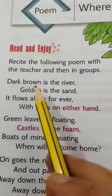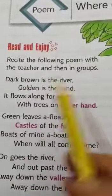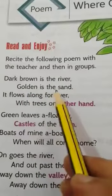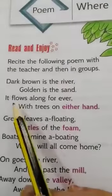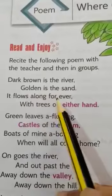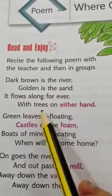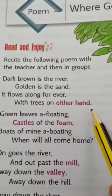Dark brown is the river, golden is the sand. It flows along for ever with trees on either hand.